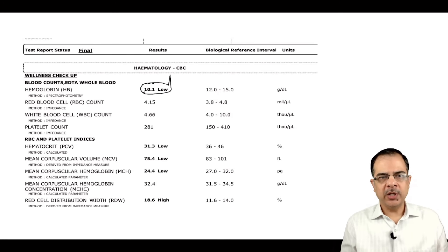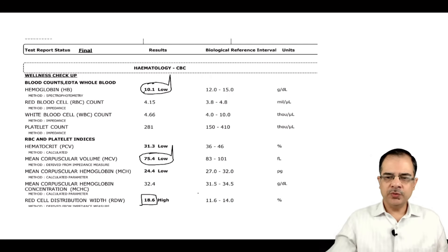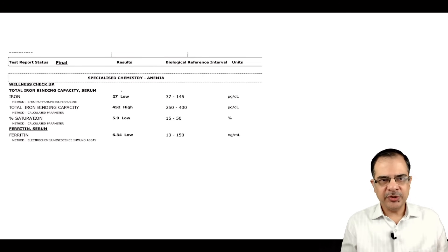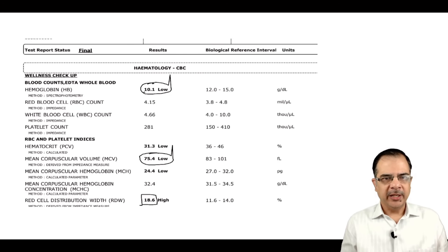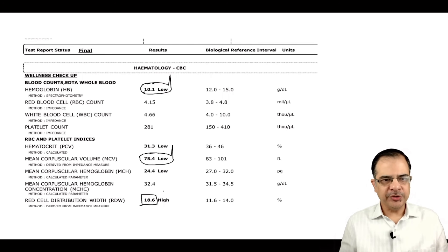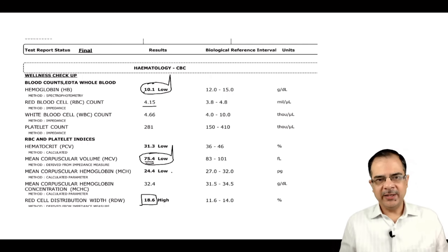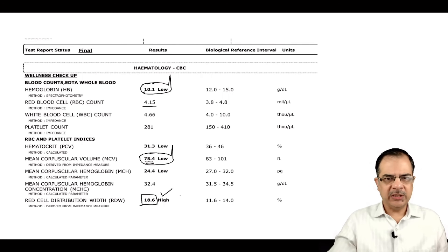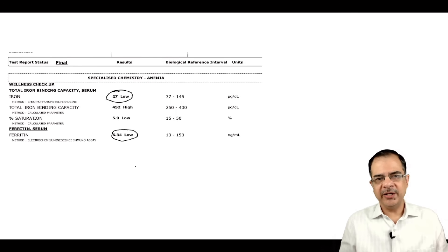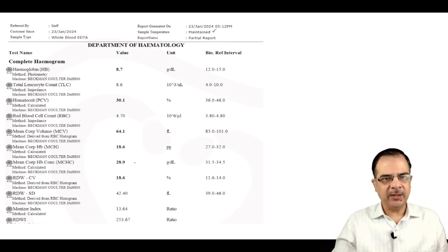Another case: hemoglobin is 10.1, MCV is low, and RDW is 18.6 — on the higher side, favoring iron deficiency. Mentzer Index calculation: MCV 75.4 divided by RBC count of 4, which would likely come out to more than 14. Iron studies confirm this — serum ferritin is low, establishing a diagnosis of iron deficiency anemia.